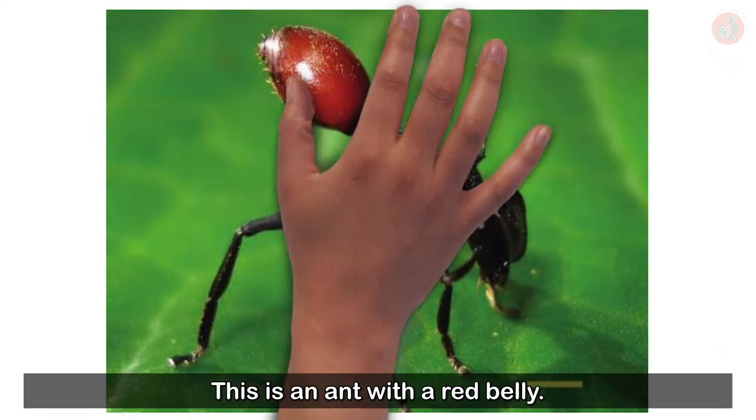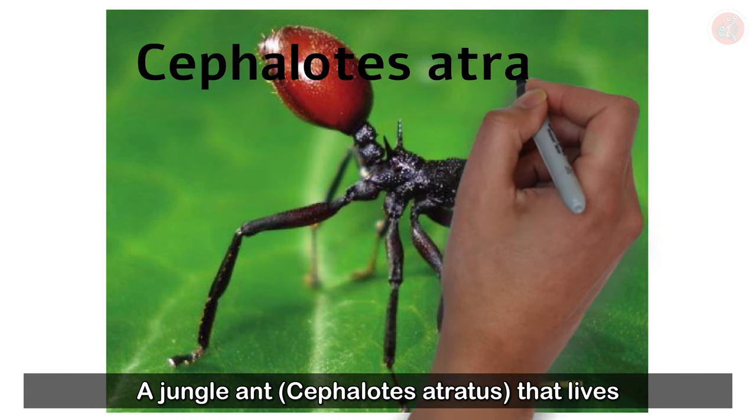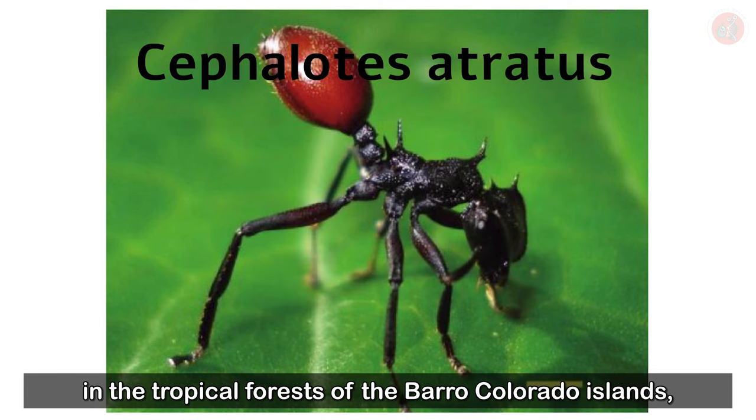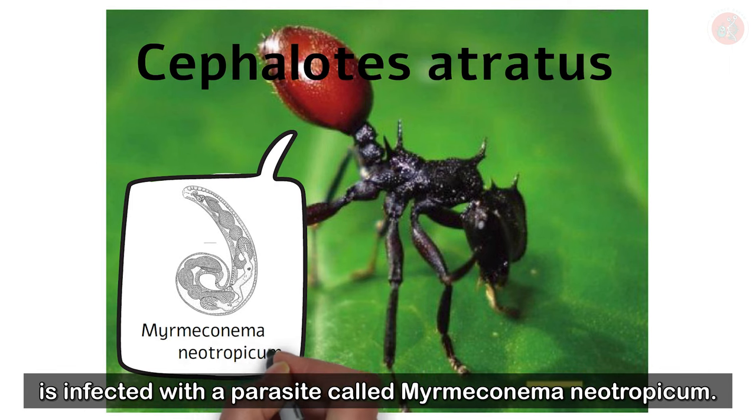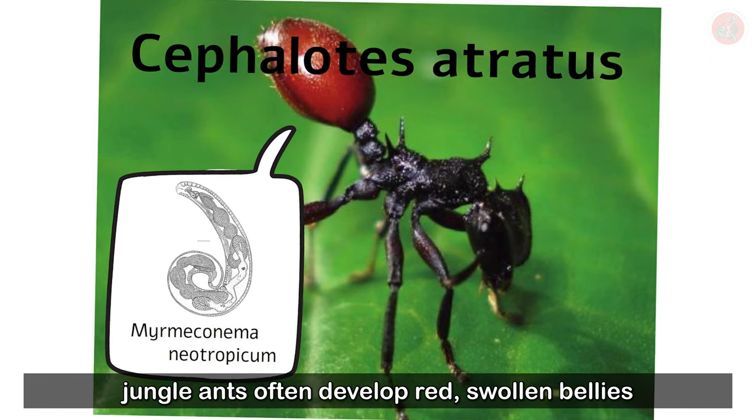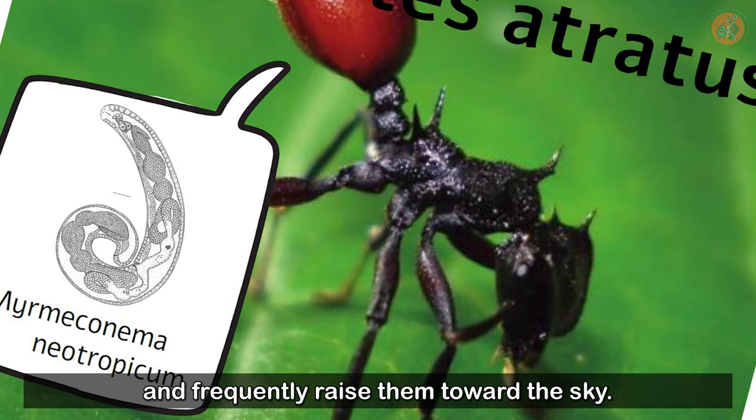Here's another example. This is an ant with a red belly. A jungle ant, Cephalotes atratus, that lives in the tropical forests of Barrow, Colorado Islands, is infected with a parasite called Myrmecanoma neotropicum. When infected with this ant nematode, jungle ants often develop red, swollen bellies, and frequently raise them toward the sky.